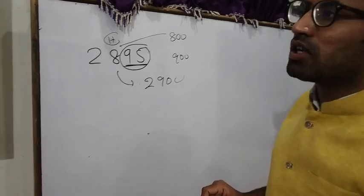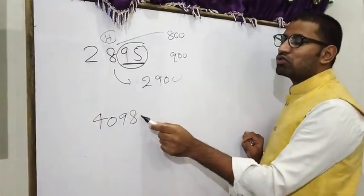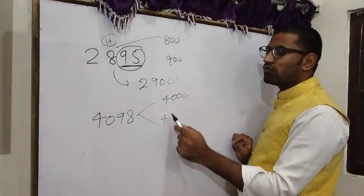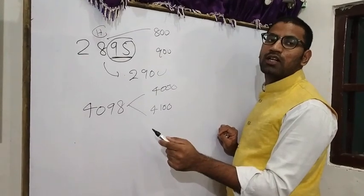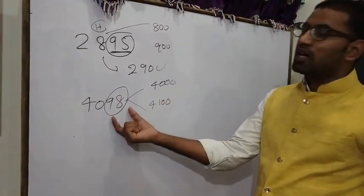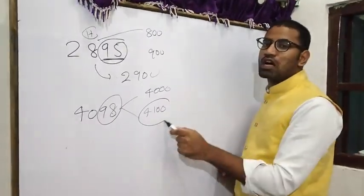Next: 4,098. Round off to nearest hundred, which is 4,000 or 4,100. So here we have ones and tens place, which is 98, which is more than 50, so here we round off to 4,100.